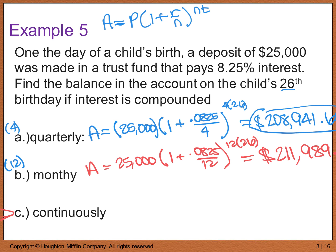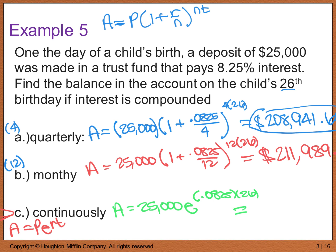For part C, compounding continuously, we use the PERT formula: A equals 25,000 times e raised to 0.0825 times 26, which gives approximately $213,551.03. Continuously compounded interest brings in a little more money at the same rate for the same time period. Please let me know if you have any questions — I hope you have a great day!